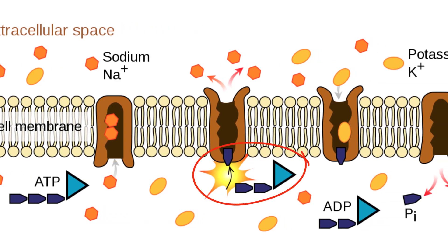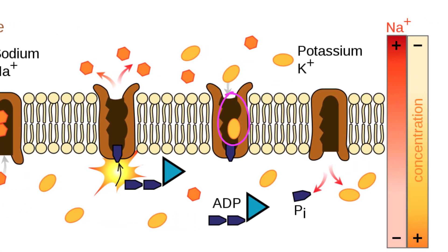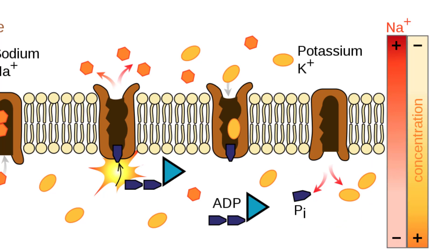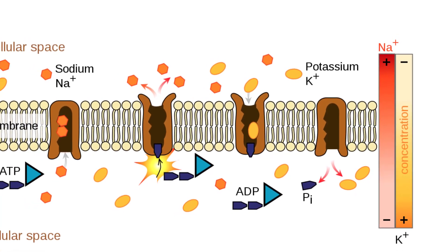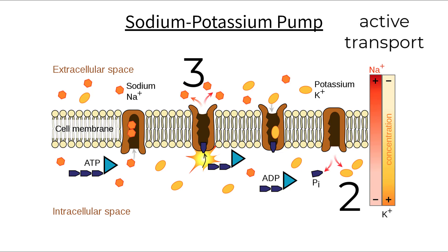An ATP molecule transfers a phosphate group onto the protein channel, which uses the released energy to alter its shape and move the sodium to the extracellular space. This alteration also opens up two sites for potassium to bind. Once the potassium is locked in, the phosphate group is released from the protein, which causes its shape to revert back to its original form, releasing the two potassium ions into the cell. This process continues to build a gradient of sodium on the outside and potassium on the inside, always with the same ratio of 3 sodium to 2 potassium moved via the pump. This is active transport because both ions are being forced to move from low to high concentration, which requires ATP.